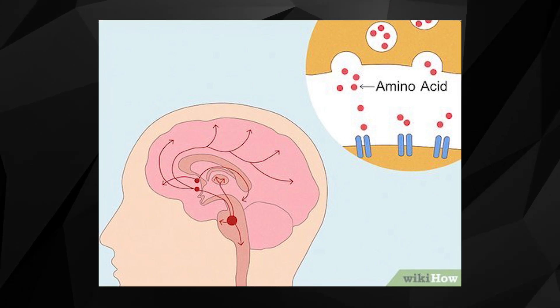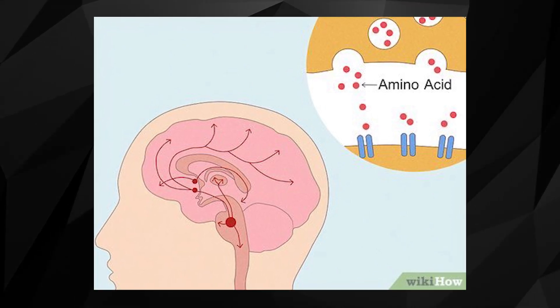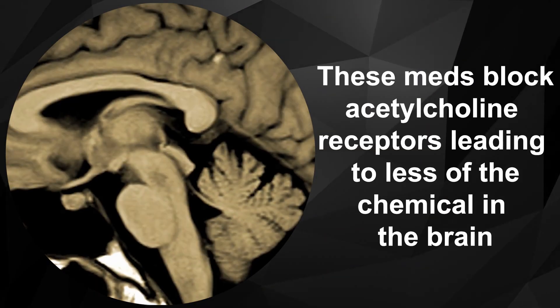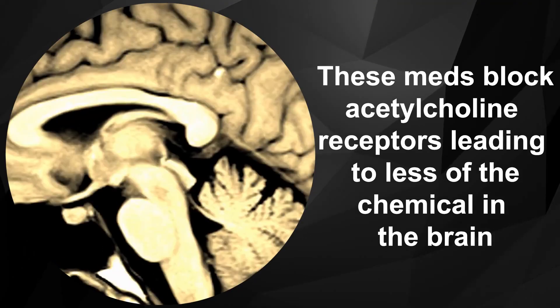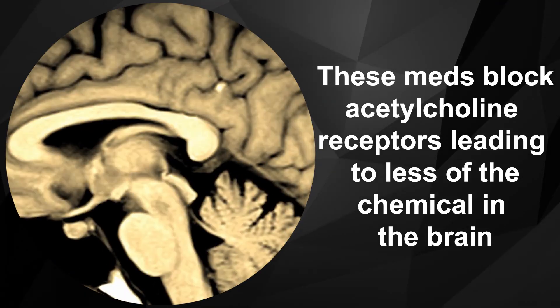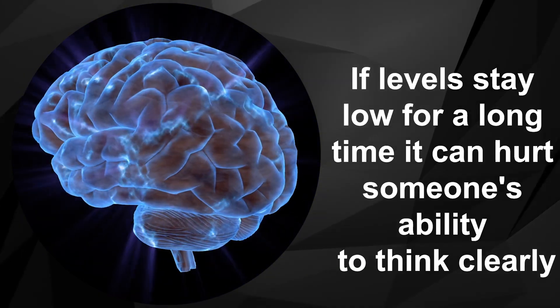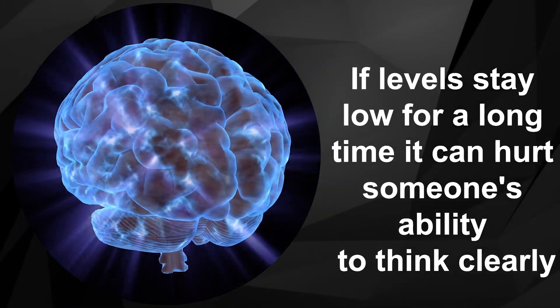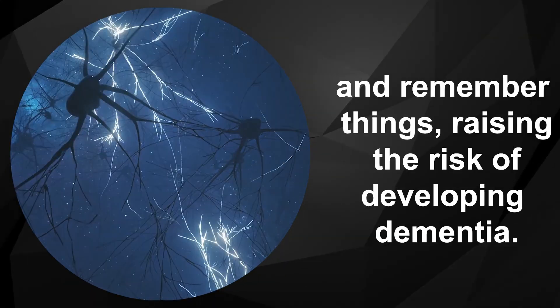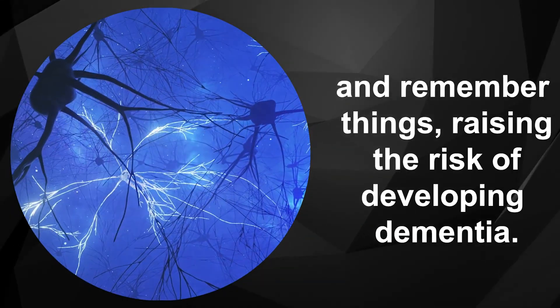Acetylcholine is critical for thinking skills and learning new information. These meds block acetylcholine receptors, leading to less of the chemical in the brain. If levels stay low for a long time, it can hurt someone's ability to think clearly and remember things, raising the risk of developing dementia.